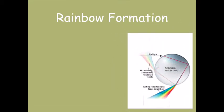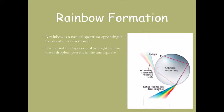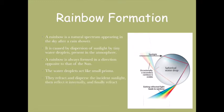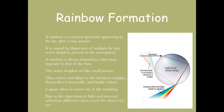A rainbow is a natural spectrum appearing in the sky after a rain shower. It's caused by dispersion of sunlight by tiny water droplets present in the atmosphere. A rainbow is always formed in a direction opposite to that of the sun. The water droplets act like tiny prisms - they refract and disperse the incident sunlight, then reflect it internally and finally refract it. Due to dispersion of light and internal reflection, different colors reach the observer's eye.